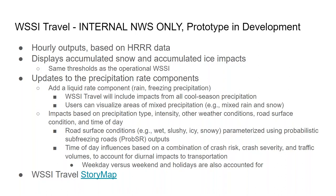We are going to make it so that users can visualize areas of mixed precipitation — areas of mixed rain and snow. We also have impacts based on precipitation type, intensity, other weather conditions, and road surface condition and time of day. We have incorporated road surface conditions such as wet, slushy, icy, and snowy for untreated road surfaces, parameterized using probabilistic subfreezing road, or PROBSR, outputs. We've also included time of day influences based on a combination of crash risk, crash severity, and traffic volumes for each hour of the day in local time, to account for diurnal impacts to surface transportation, as well as weekday versus weekend and holidays to account for morning rush hours and travel patterns.